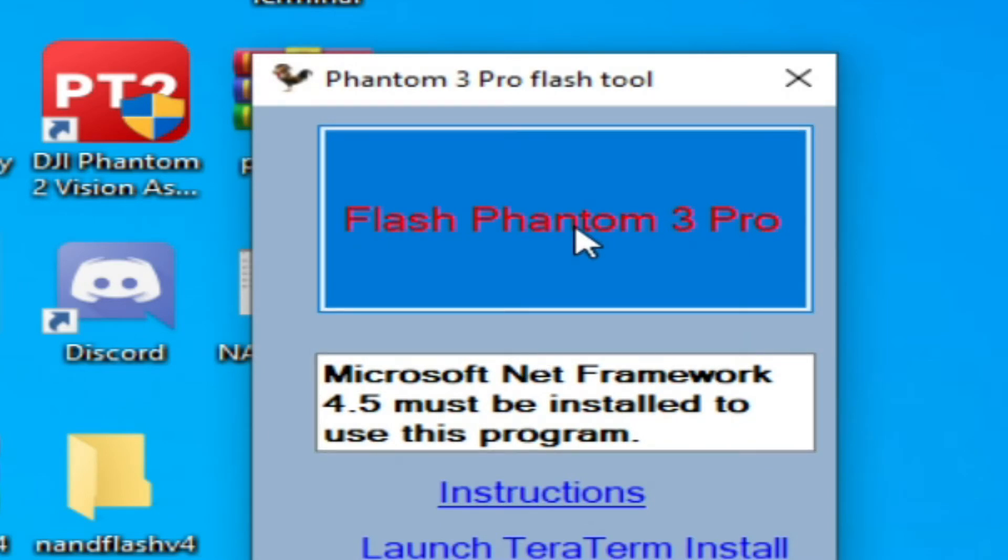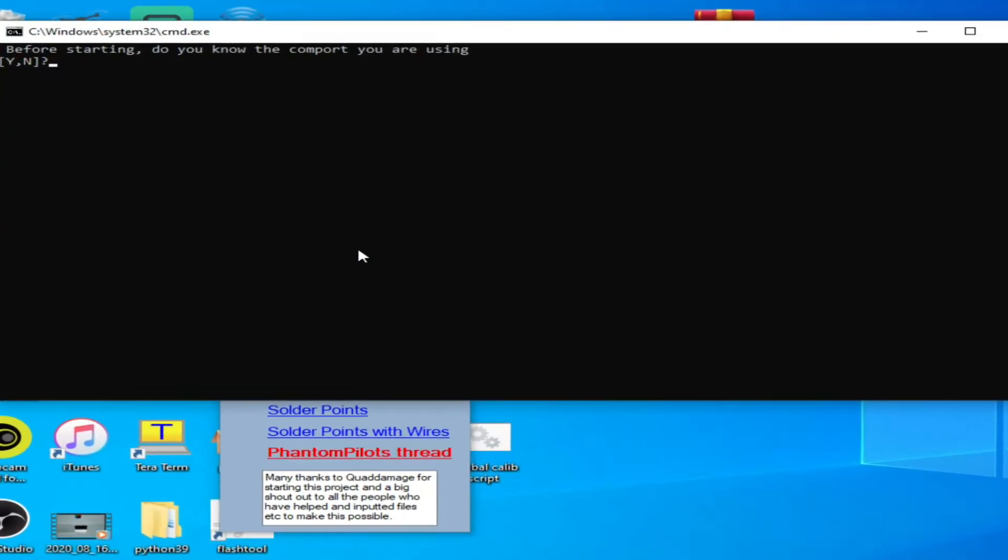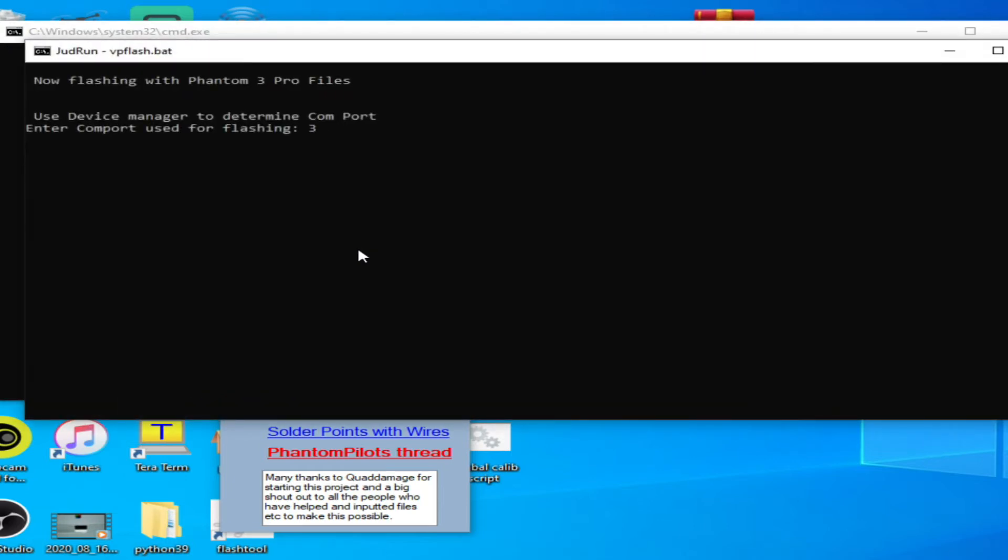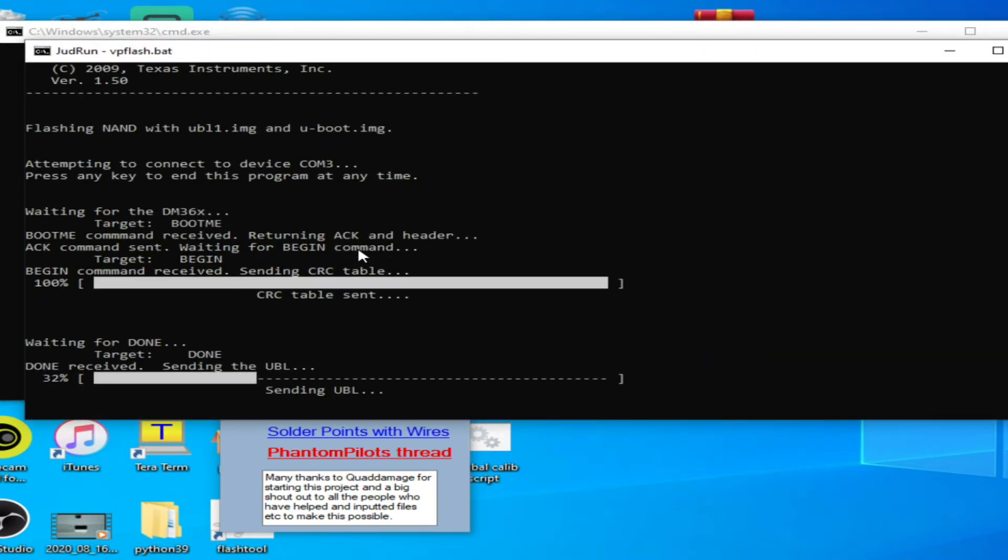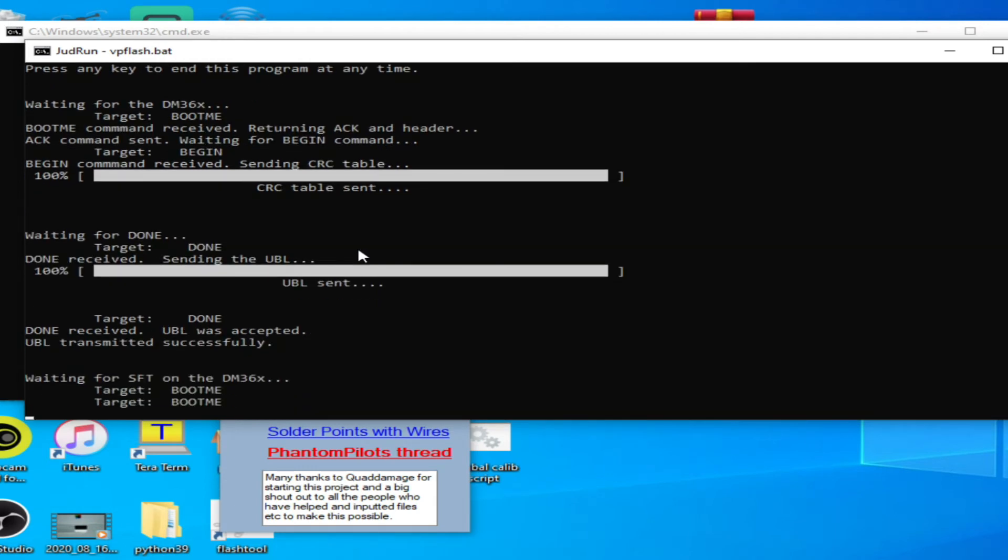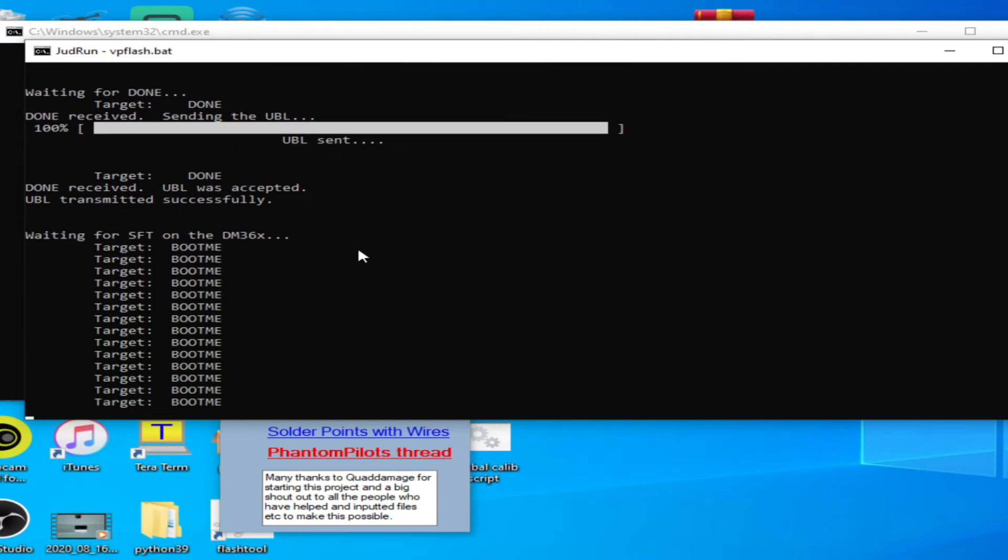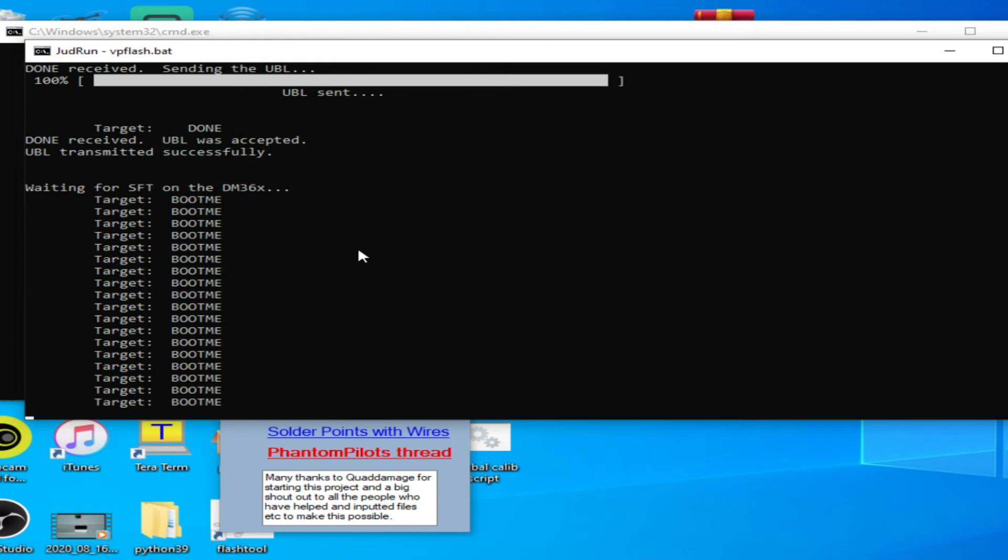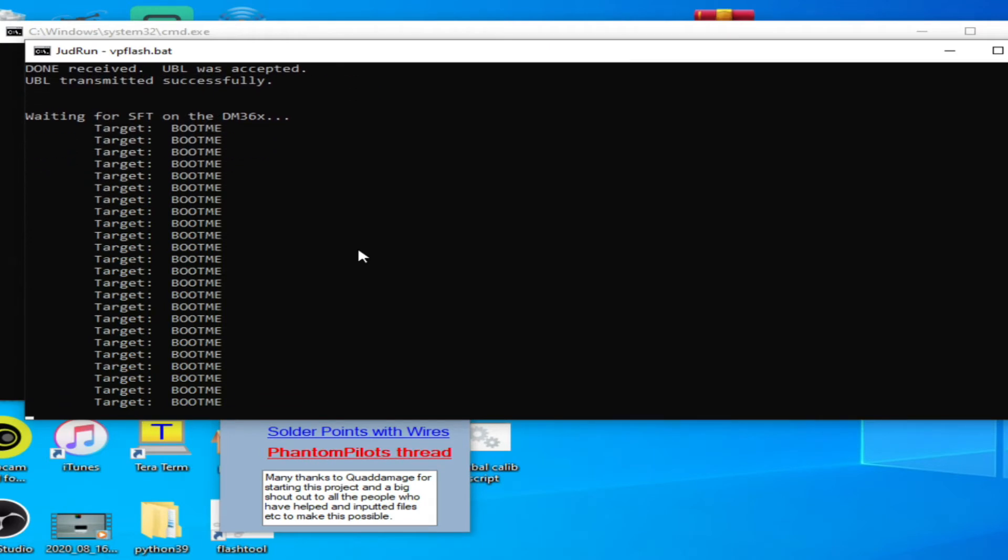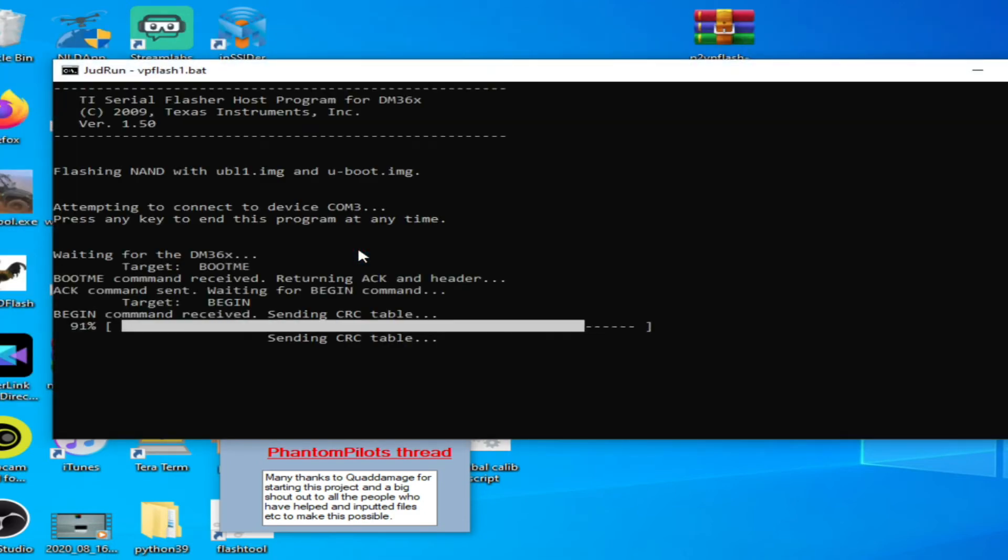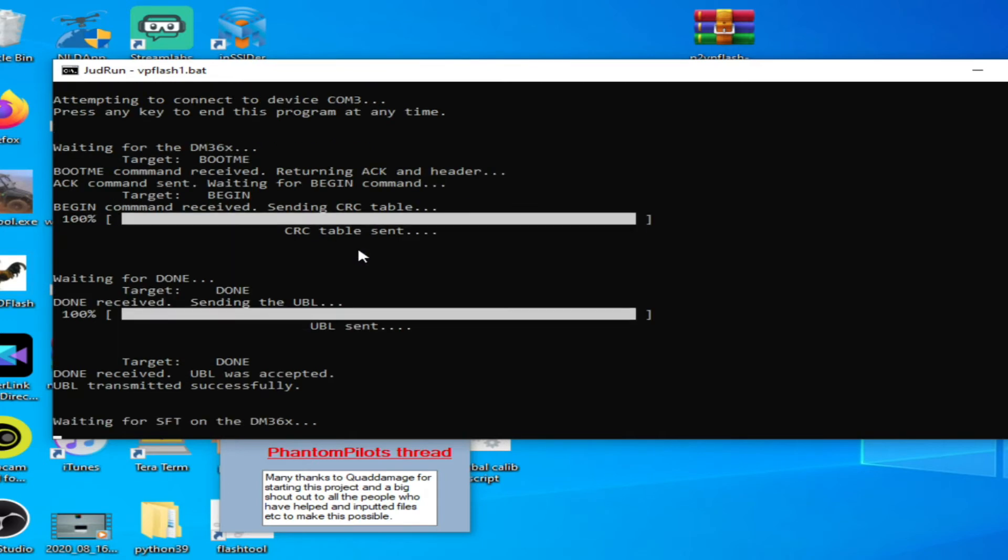So I'm going to run the module and you can see I'm getting the boot me boot me message. That means this board is now ready to have its instructions written to. So I'm going to run the tool and click on there and it says quite clearly flash Phantom 3 Pro. I know the com port. If you don't know the com port click no, it will open device manager for you. We're going to use com port 3, press enter. You'll now start the flash. This is an automated process so don't touch anything, just leave it to run. Don't interrupt it.